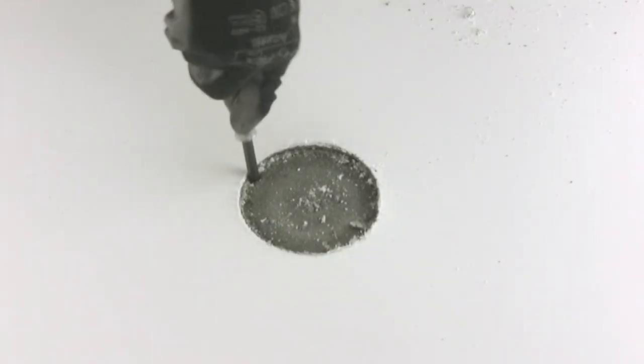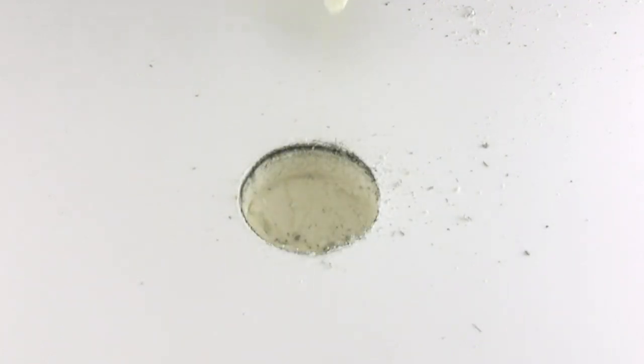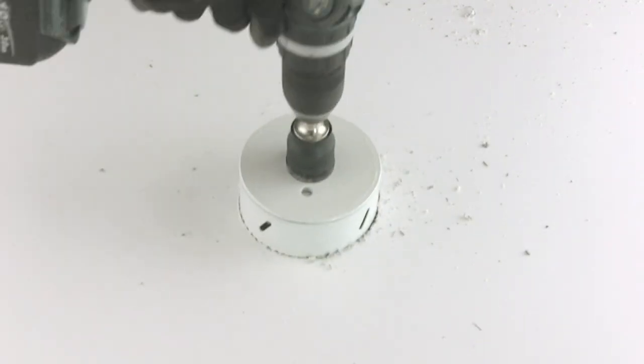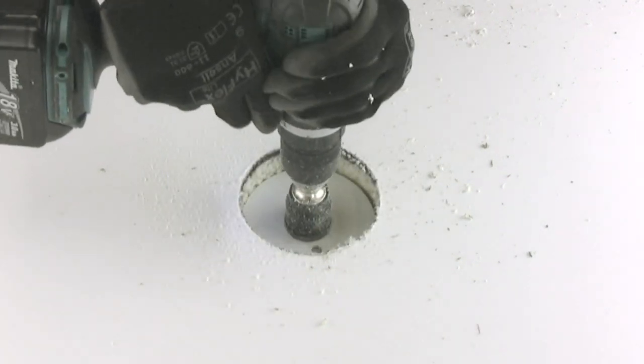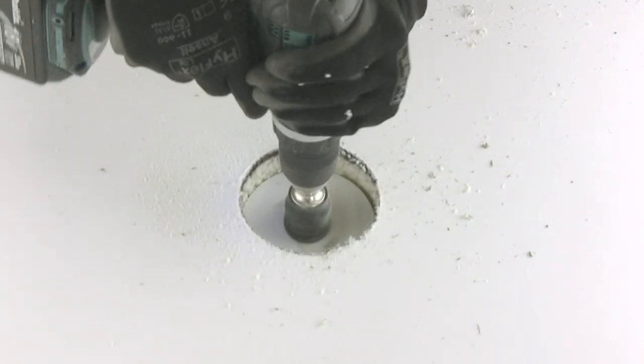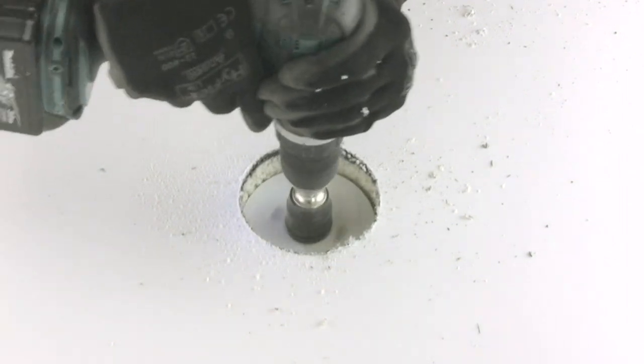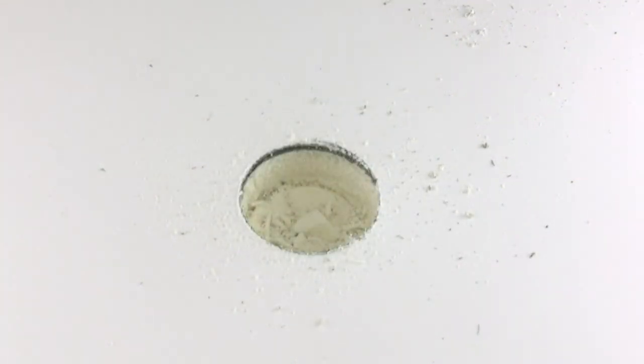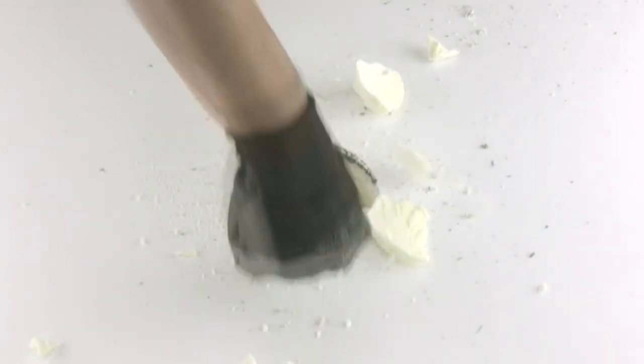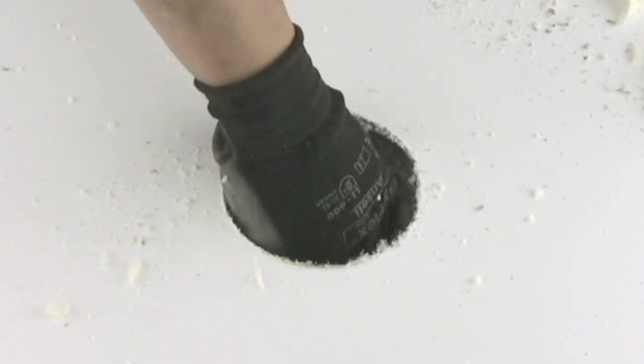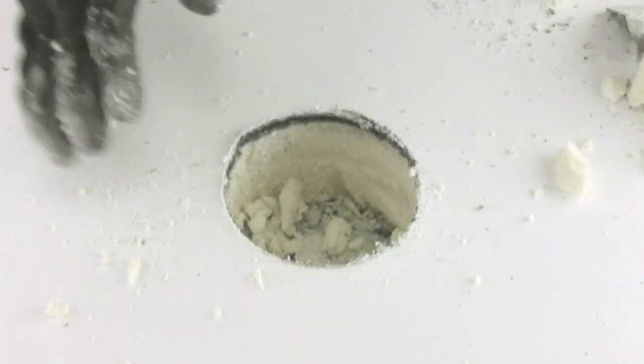Remove the insulation from the hole and save the larger pieces. You can use these to backfill the hole when you're done. You can use a vacuum to clear out the dust and debris.